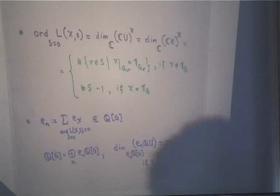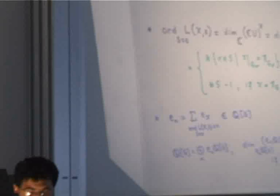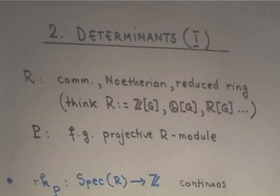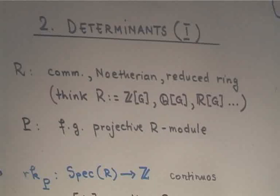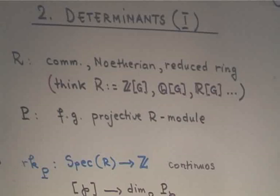In order to tell you what's really going on, I should tell you a little bit about determinants. This is part one of my discussion about determinants — there will be a slightly more sophisticated treatment coming up later. R is a commutative Noetherian reduced ring; think of R as being either Z[G], Q[G], or R[G]. P is a finitely generated projective R-module, and to this you can associate a rank function, which is a continuous function on the spectrum of R with values in Z.